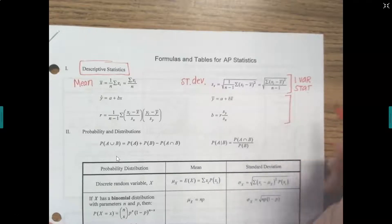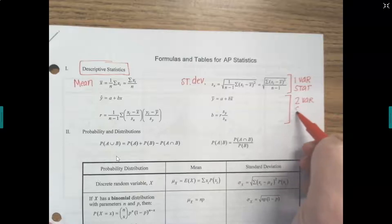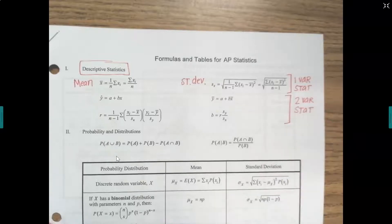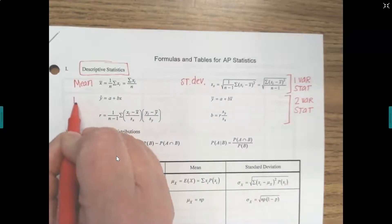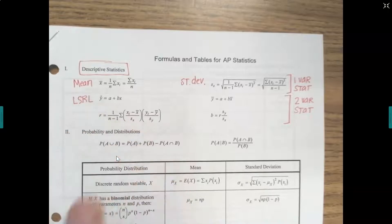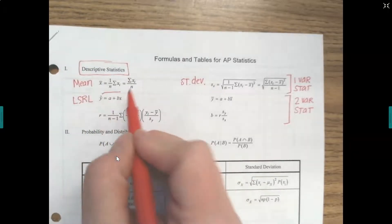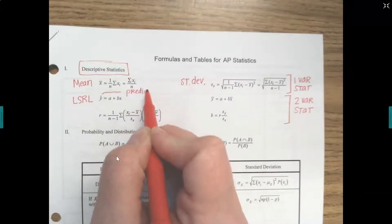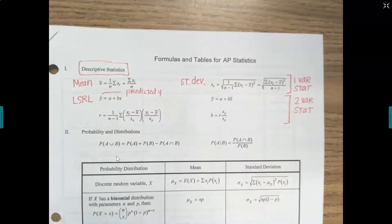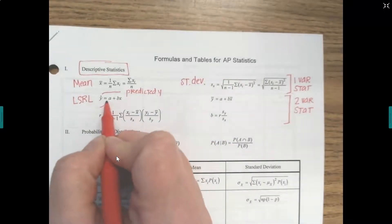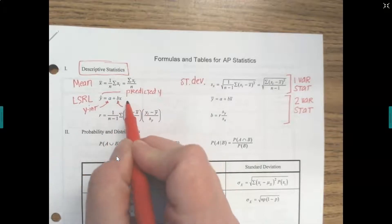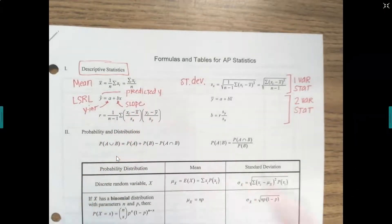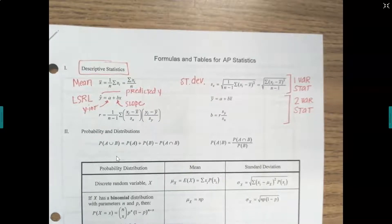This next section covers two-variable stats. You enter the data in list one and list two, then press two-variable stats to get the information. The important formula here is the least squares regression line. Y-hat — it's very important to include the hat, meaning predicted y, not the actual y. Your 'a' is your y-intercept and your 'b' is your slope, which you pull from the calculator and plug in.